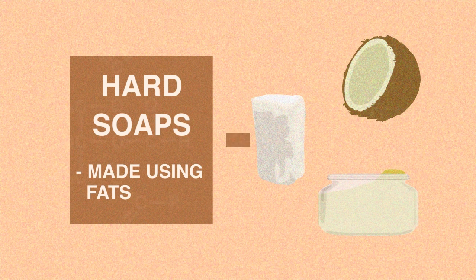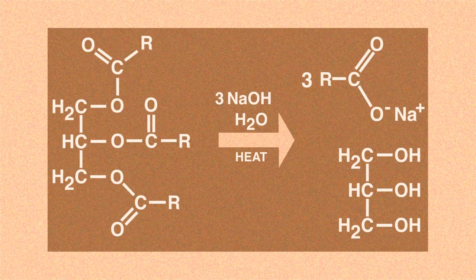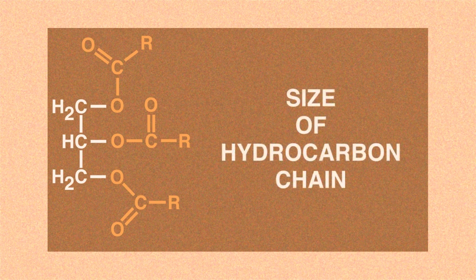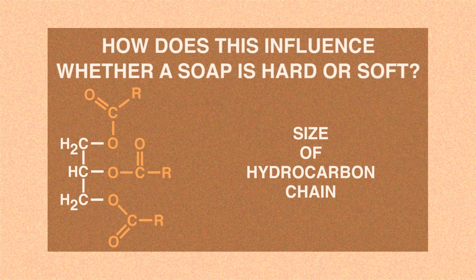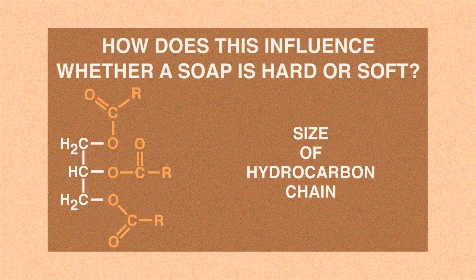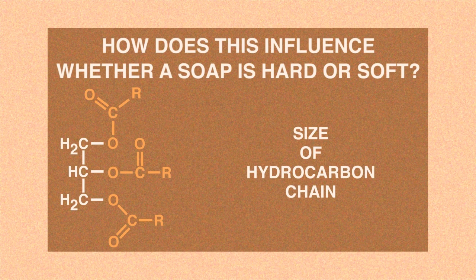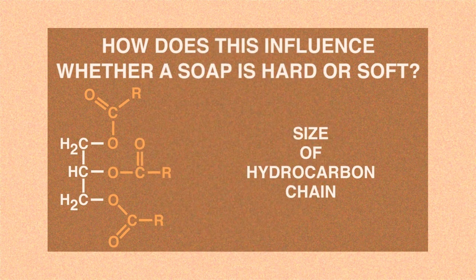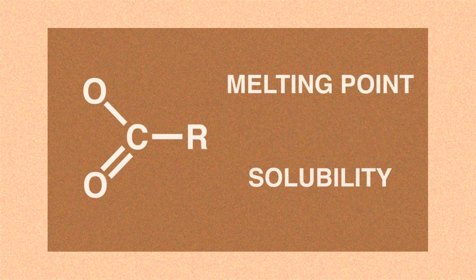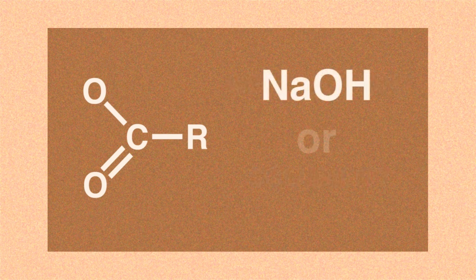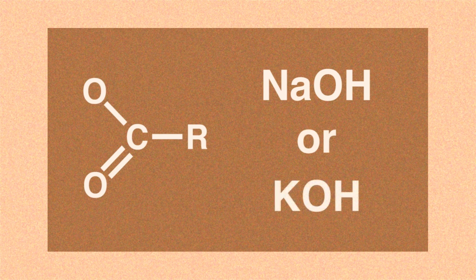Look at the equation shown now. The R group represents the size of a hydrocarbon chain. The R groups of a particular length alters the fat's properties, particularly its melting point and its solubility. In addition, the choice of base, such as whether you use sodium hydroxide or potassium hydroxide, is also important.